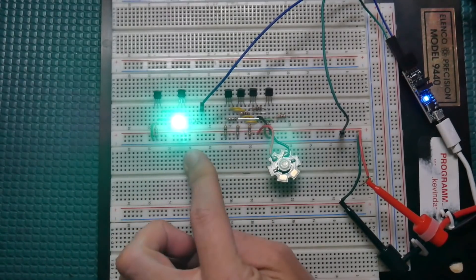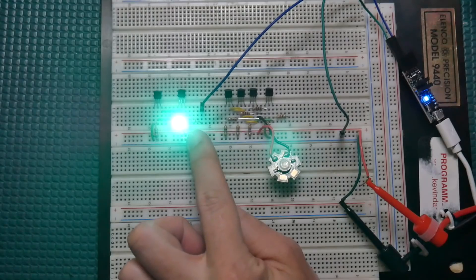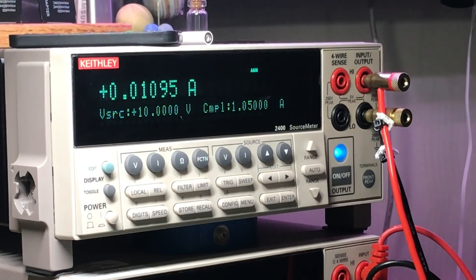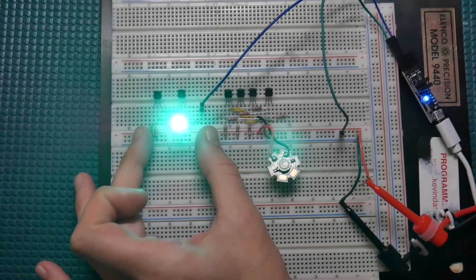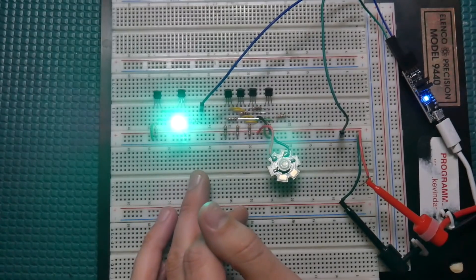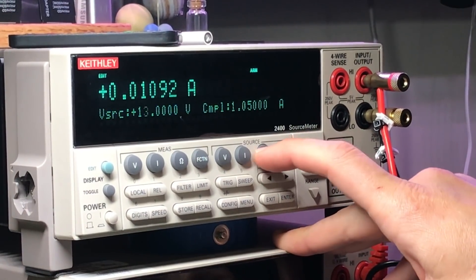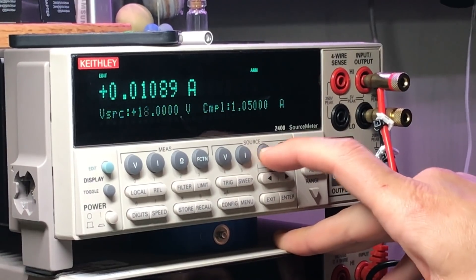Right here in this example we're just driving a constant current through this LED and you can see up on the meter it's set to about 11 milliamps. And what the constant current regulator will do is regulate that current. So as we increase the input voltage from 10, 11, 12, you can see that the current is constant.